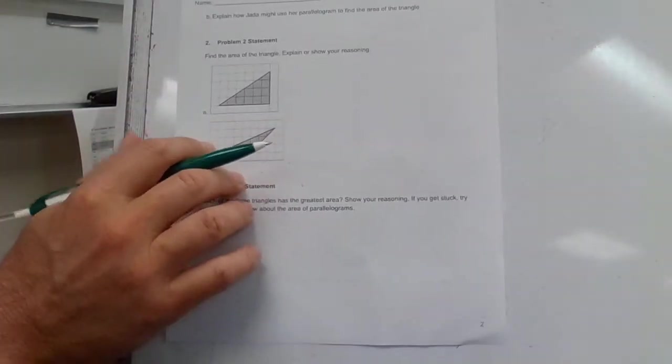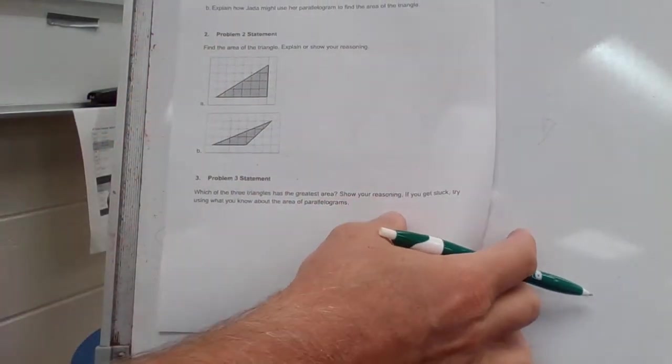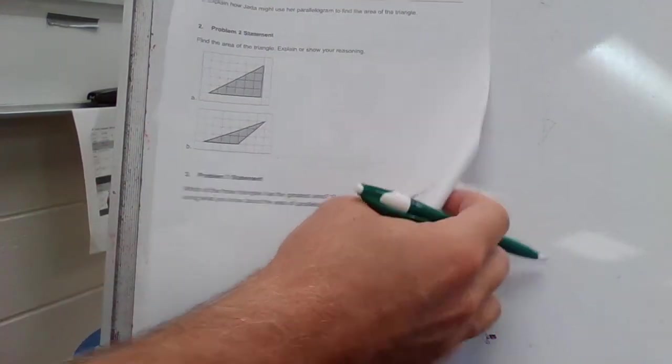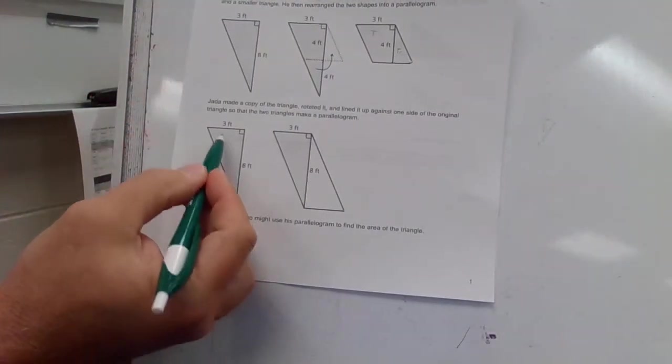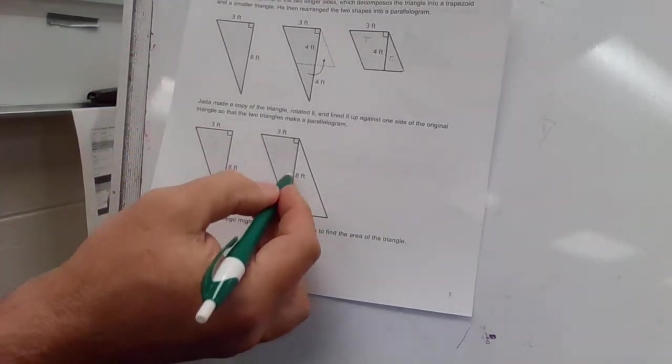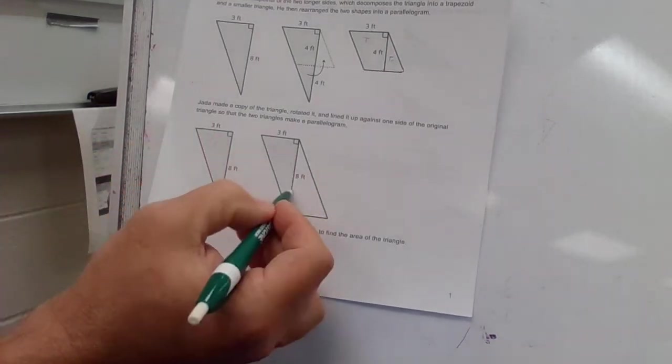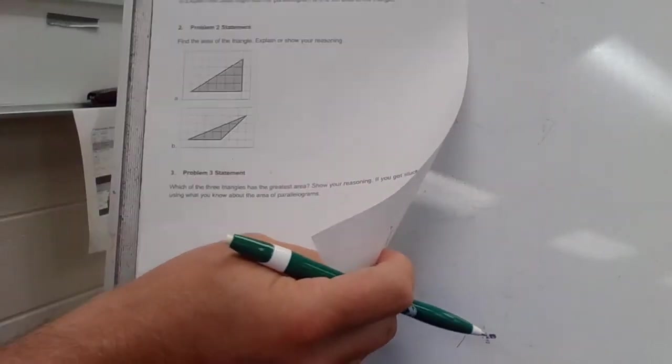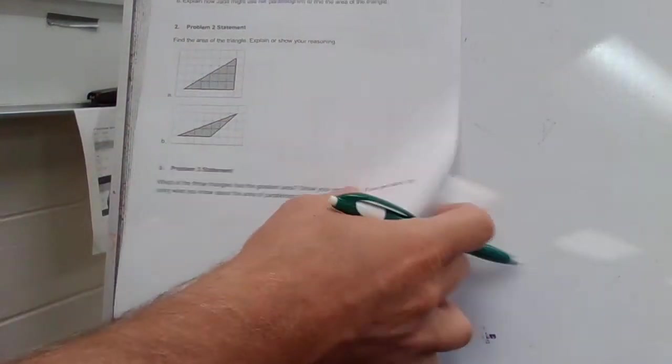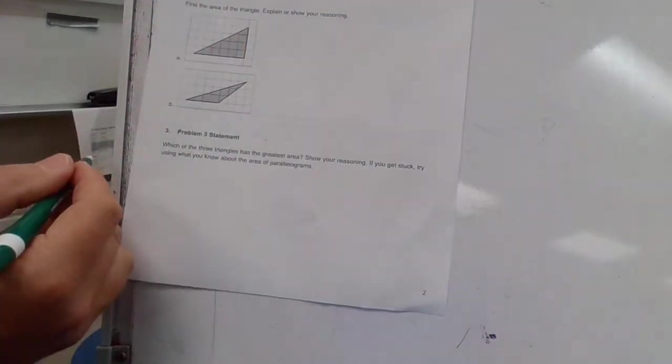Explain how Jada might use her parallelogram to find the area of a triangle. We talked about she made a copy of that and rotated it into a parallelogram. She's got the dimension right there. Explain how she might use her parallelogram, which is what she created here, to find the area of the triangle.